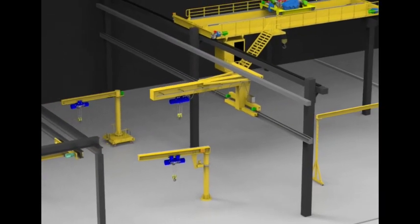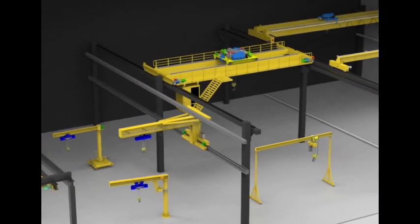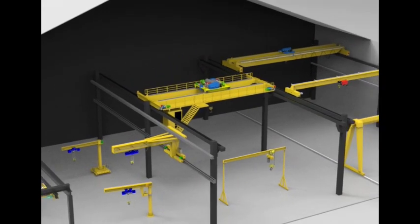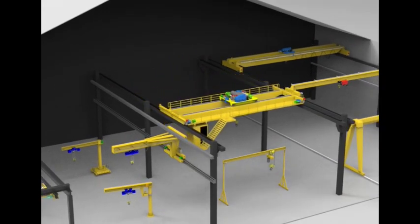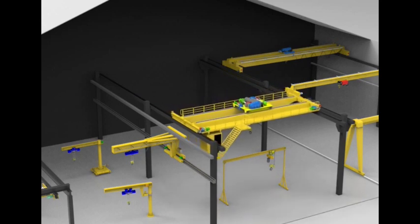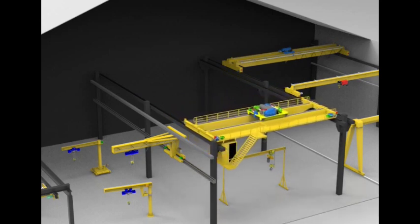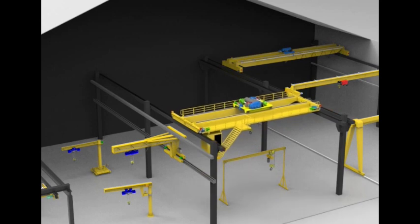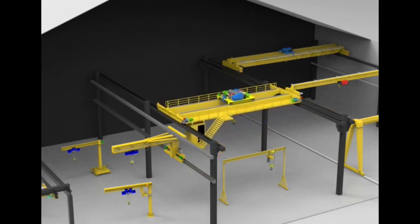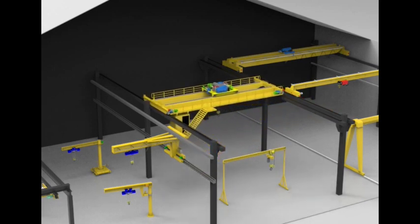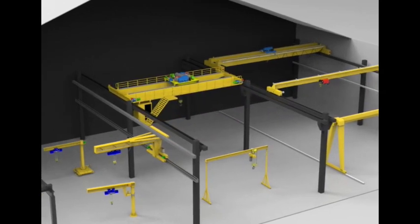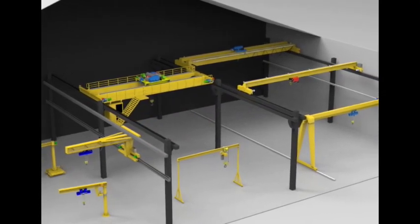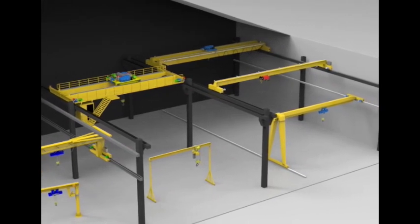Double Girder Overhead Cranes With Open Winch Trolley, 5 ton up to 320 ton. Double Girder Overhead Cranes feature two horizontal girders supporting the hoist and trolley. They are capable of handling heavy loads, ranging from 5 tons to 320 tons, making them a powerhouse in workshops. These cranes are indispensable in heavy industries and large workshops where precision and strength are essential.